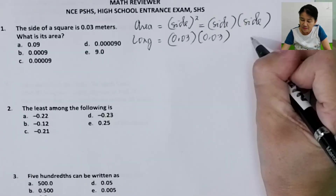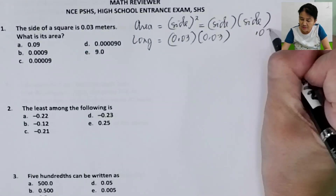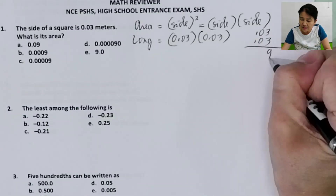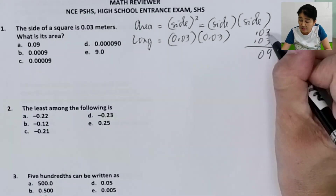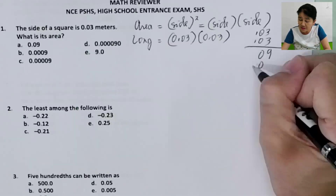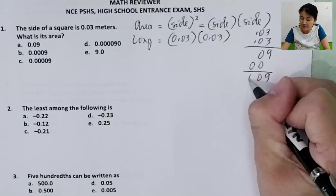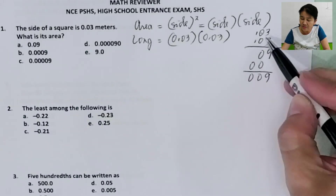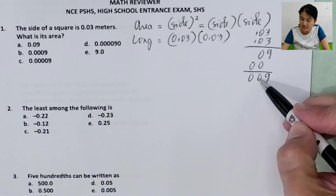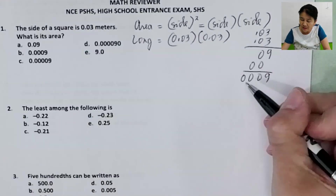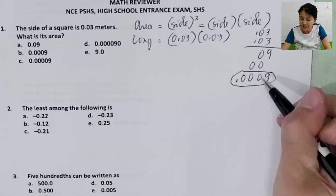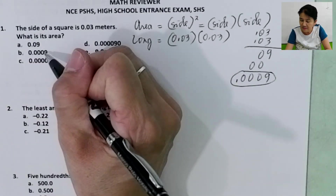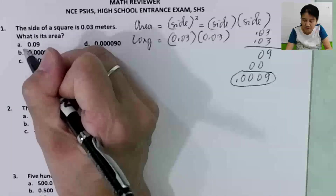Long way: 0.03 times 0.03. 3 times 3 is 9, 0 times 3 is 0, 3 times 0 is 0, 0 times 0 is 0. Then count the number of decimal places — we have 1, 2, 3, 4 decimal places total, giving us 0.0009. Letter B.